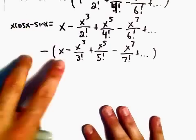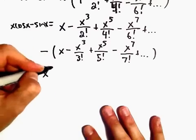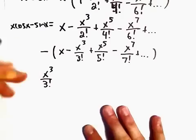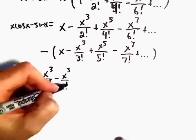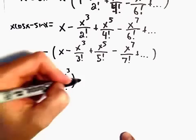It looks like we would be left with a positive x to the third over 3 factorial and a negative x to the third over 2 factorial. We could always simplify this, but I'm going to leave it here for now.